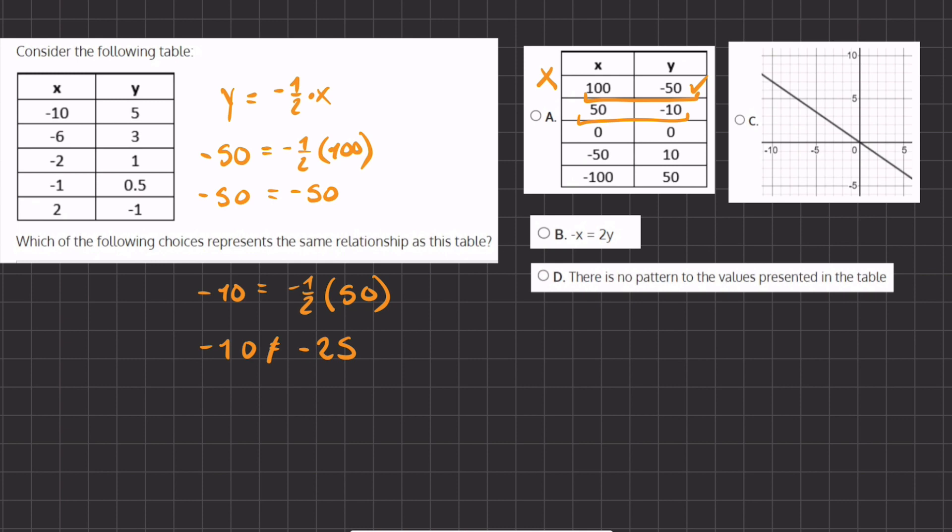Let's move on to the graph of option C. And here we have, let's pick the point 0, 0. And if we plug this into our formula, let's clear some space here first. If we plug this into our formula, we get y equals 0, equals negative half times x, which is also 0. So now we get 0 equals 0, and this point seems to be correct.